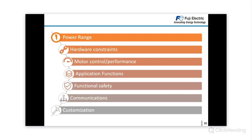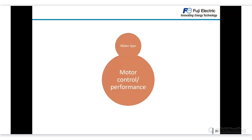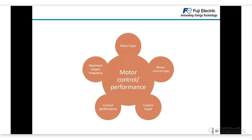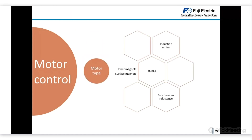Jumping to motor control and performance, key points include motor type, control type, control target, control performance, and maximum output frequency. In the industry we may face several types of electrical motors. Fuji Electric drives can control induction motors and permanent magnet synchronous motors, both with inner or surface-mounted magnets. Induction motors are supported across the full portfolio, and nearly all drives can also control permanent magnet synchronous motors in both open and closed loop. Synchronous reluctance motors are still being worked on.